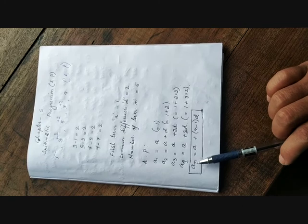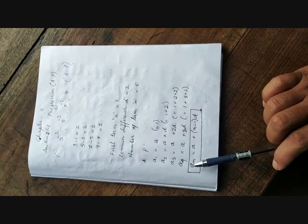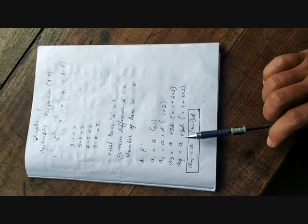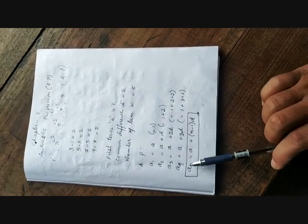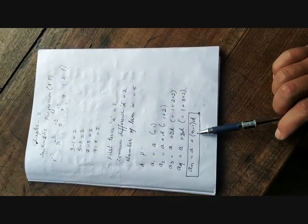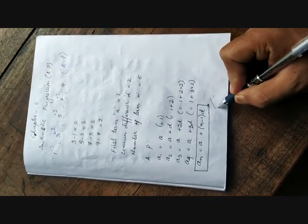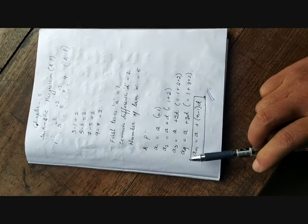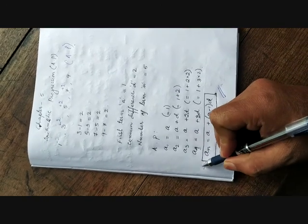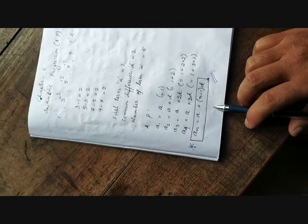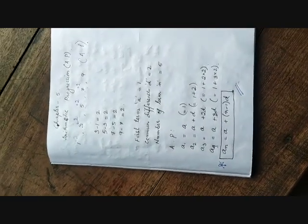And for the nth term, the nth term is equal to a plus one less than the number of terms. That means if n is the number of terms, then n minus 1 times d. We will be needing this formula later on.